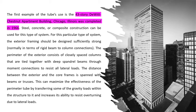Steel, concrete, or composite construction can be used for this type of system. The exterior framing should be designed sufficiently strong, normally in terms of rigid beam-to-column connections. The perimeter consists of closely spaced columns tied together with deep spandrel beams through moment connections to resist all lateral loads. This maximizes the effectiveness of the perimeter tube by transferring gravity loads and increasing its ability to resist overturning due to lateral loads.